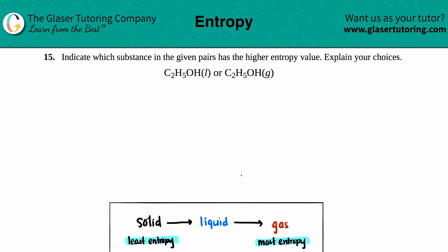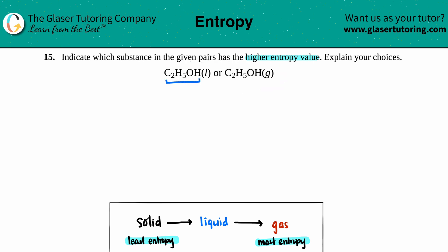Number 15: indicate which substance in the given pairs has the higher entropy value and then explain your choices. In this set we have C₂H₅OH and C₂H₅OH — so we have the same compound, but one is a liquid and the other one is a gas.